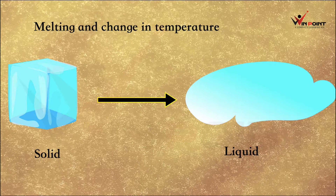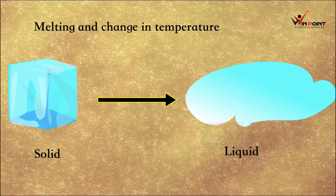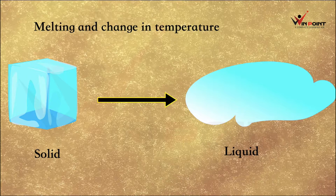For example, if we consider a solid at atmospheric temperature of 27 degrees Celsius and begin heating it, the temperature will increase — 28, 29, 30, 35 degrees Celsius. If the solid converts into liquid at 35 degrees Celsius, that temperature is known as the melting point. The temperature at which a solid converts into liquid is called the melting point.